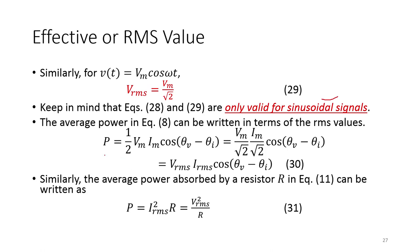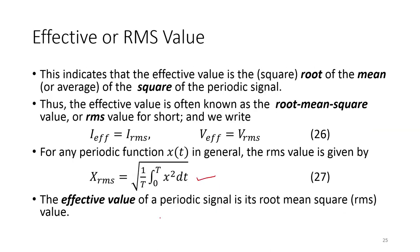Looking back at the average power relationship — it was one-half Vm·Im·cos(θv − θi). Splitting the one-half as (1/√2)·(1/√2), we can write Vm/√2 and Im/√2, which are the RMS values. So the average power can be written as VRMS·IRMS·cos(θv − θi). Similarly, the average power absorbed by a resistor — previously written as one-half I²R — can now be expressed as IRMS²·R.